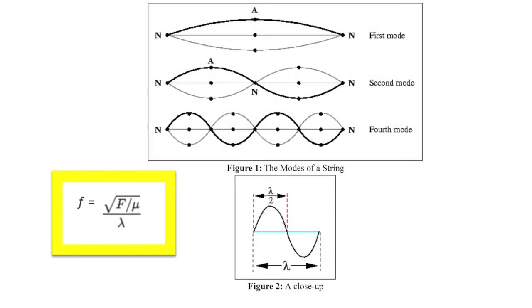The frequency of the wave is equal to 1 by lambda times the square root of F over mu, where big F is the tension in the string, mu is the weight per unit length of the string, and lambda is the wavelength.